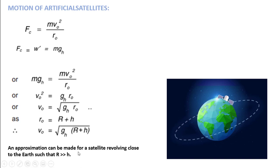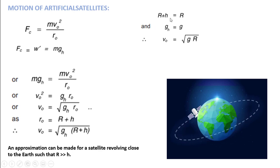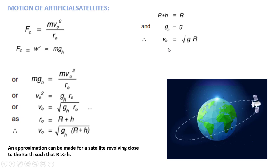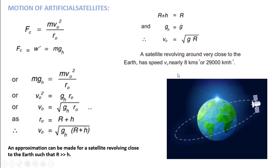Now an approximation can be made as a special case: if a satellite is orbiting very close to the Earth's surface, then the height H is approximately zero compared to R, so r₀ ≈ R. Also, at the surface g remains g. So the equation simplifies to v₀ = √(gR). For a satellite revolving very close to the Earth, the orbital speed v₀ is approximately 8 km/s, or 29,000 km/h. This is an experimentally calculated value.